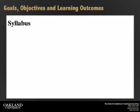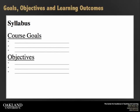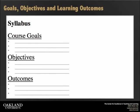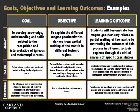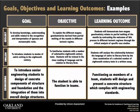Because of the sequential nature of these activities, usually a syllabus or project description will first describe the goals, and then provide the objectives and the learning outcomes. These examples of goals, objectives, and learning outcomes follow this pattern, providing examples from multiple disciplines such as geology, English, and engineering.